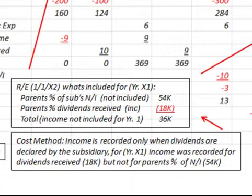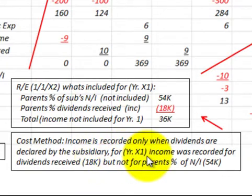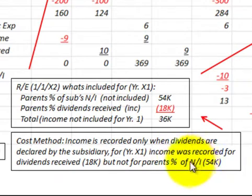Just to refresh: under the cost method, income is recorded only when dividends are declared by the subsidiary. For year X1, income is recorded for dividends received of 18,000 dollars, but not for the parent's percent of net income of 54,000 dollars. We have to account for that difference in our adjustment.